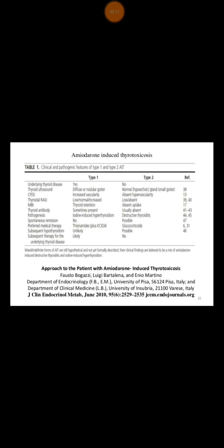Another way to differentiate is by doing a thyroid Doppler, which will show increased vascularity in Type 1, but vascularity will be absent in Type 2 because it is destructive thyroiditis. When it comes to the radioactive iodine scan, it is not recommended to perform this scan, but it may help in that Type 2 usually shows low uptake given its destructive nature.